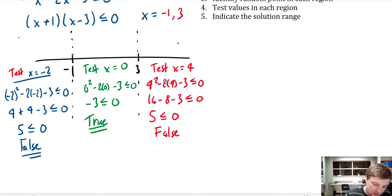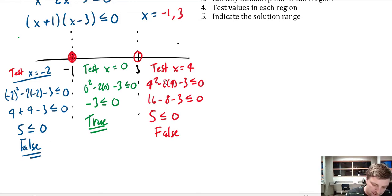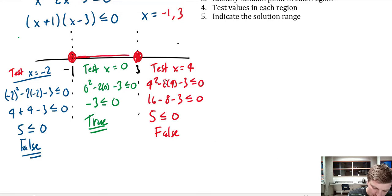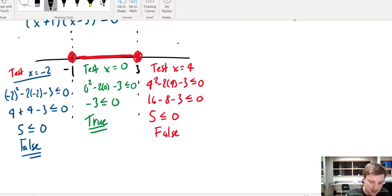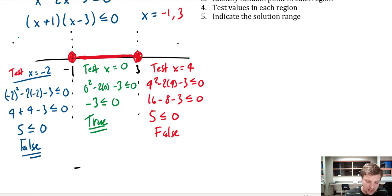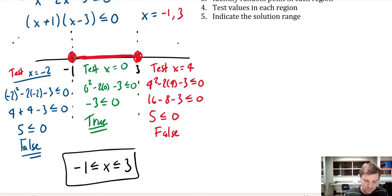To show the solution, I circle the two root points and fill them in — meaning those endpoints are included. Then I shade the region in between, indicating that any value from negative 1 to positive 3 is a solution. Written algebraically, this is: negative 1 is less than or equal to x, which is less than or equal to 3.